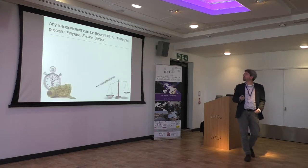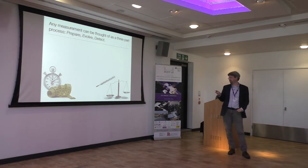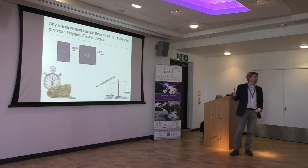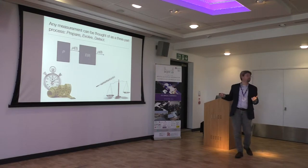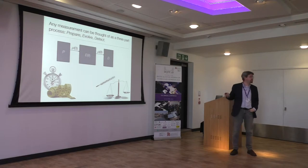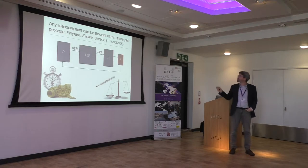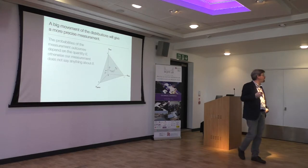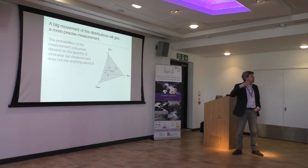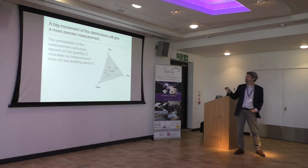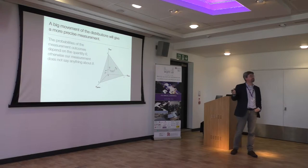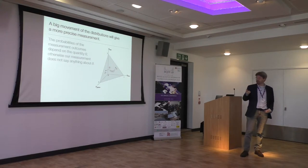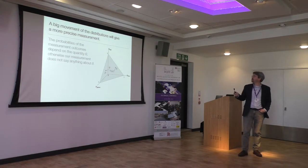In any measurement device, you can think of it as a three-part process. We prepare a probe system in some quantum state rho-naught, then we evolve it and imprint some parameter on the state — this can be multiple parameters. Then we do some kind of detection, and typically there's also a feedback loop. When you're doing precision measurements, you want to measure the size of theta — it could be a phase or anything. You have a probability distribution of your measurement outcomes, and that should change as theta changes, because if it doesn't, you're not really seeing anything.